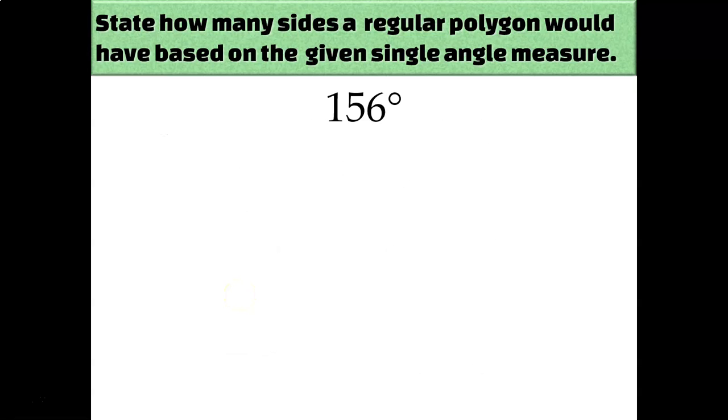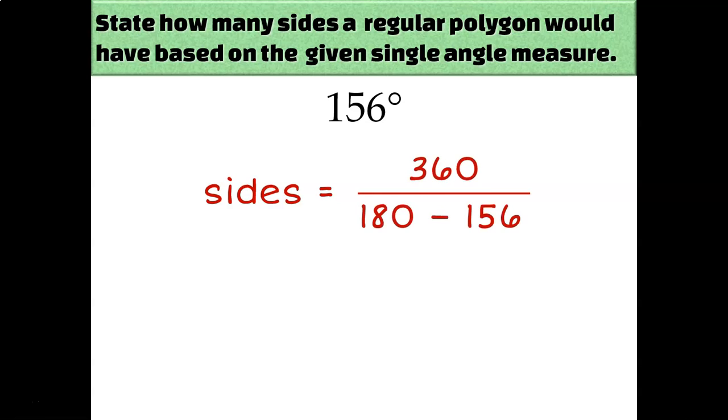So for example, if I knew that each of the angle measurements in this regular polygon were 156 degrees each, and I wanted to know how many sides does it have? I would say that the number of sides is equal to 360 over 180 minus 156. And that would give you an answer of 15 sides. So if it is a regular 15-sided figure, then each of the interior angle measurements is equal to 156 degrees.